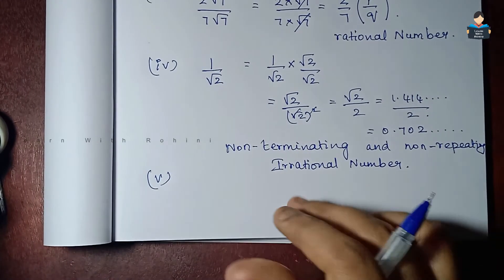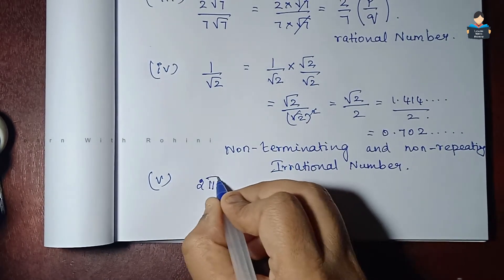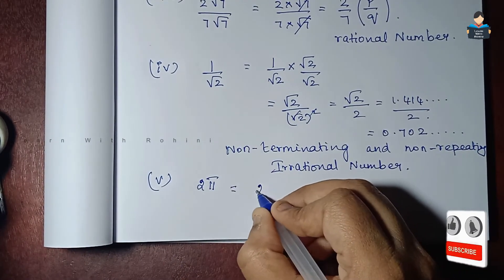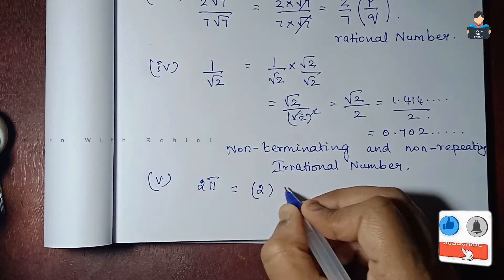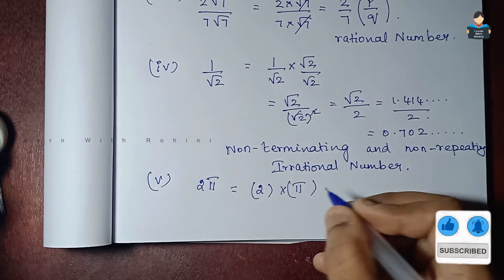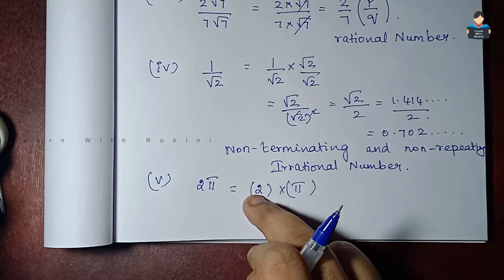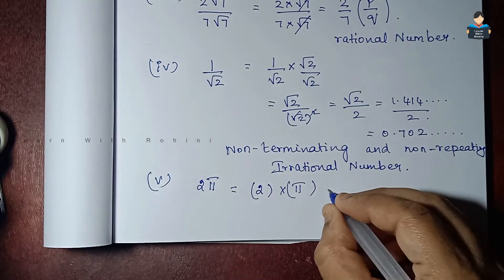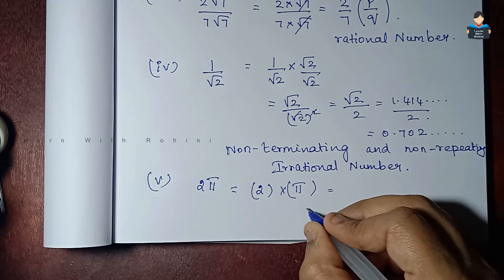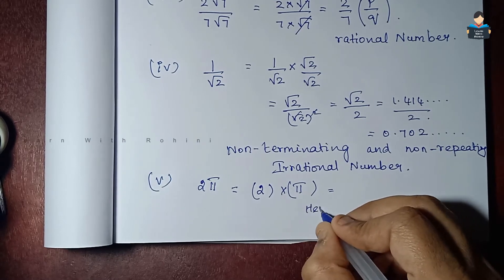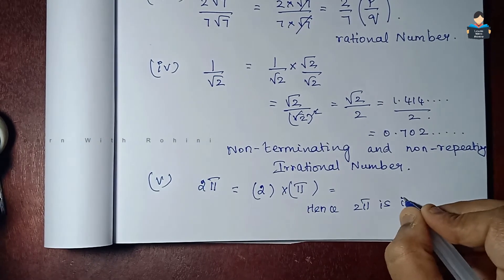Fifth subdivision: 2π. Pi is irrational, and 2 times an irrational number is irrational. Hence 2π is irrational.